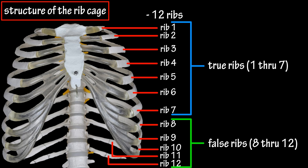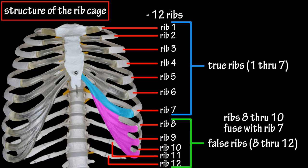Ribs 8 through 12, located at the bottom of the rib cage, are called false ribs because they do not directly connect to the sternum from their own costal cartilages. Ribs 8 through 10 fuse with the costal cartilage of rib 7, and ribs 11 and 12 are called floating ribs because they do not connect with the sternum at all.